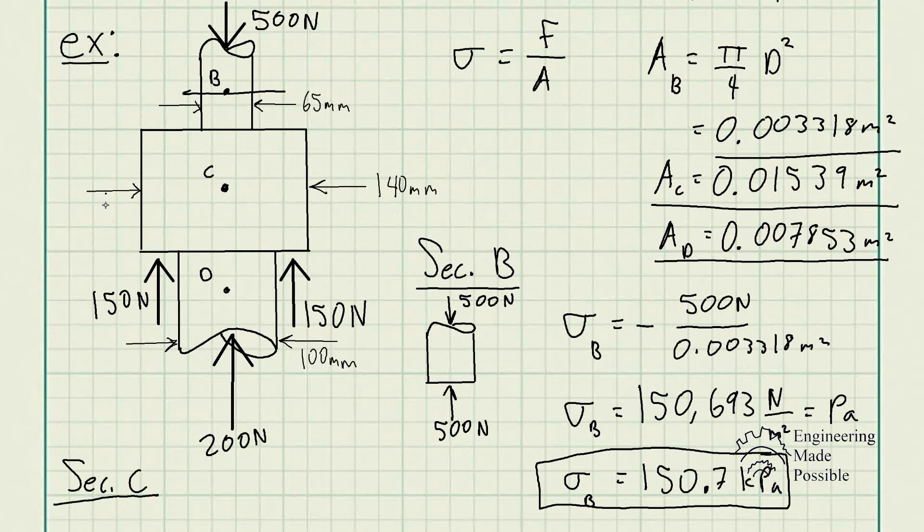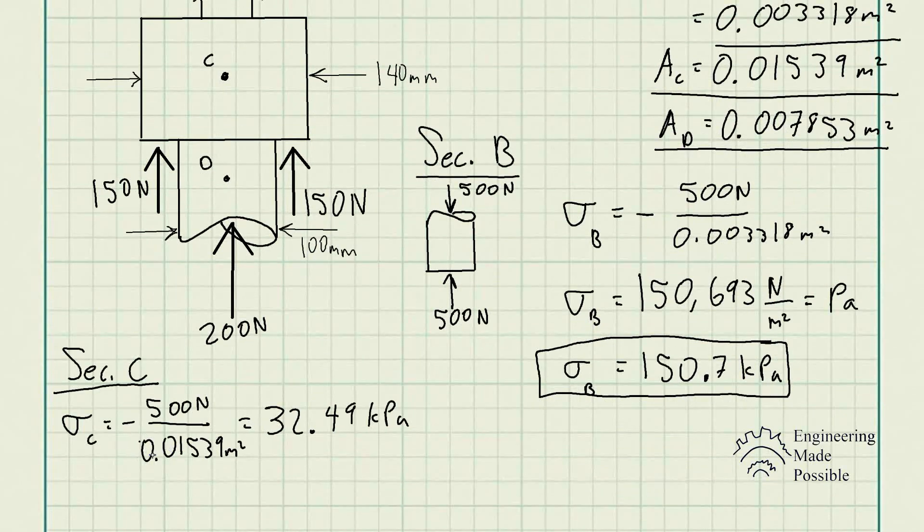We could see, if I happen to cut it right at point C, and whether I use the bottom portion as my free body diagram or the top, the sum of the external forces are always going to be 500 newtons. If I choose the top portion, it's 500 newtons. If I choose the bottom portion, it's these three external forces, which is equivalent to 500 newtons. So that's going to be the external force being applied at this location. So, the stress at C is equal to negative because we're seeing it's being compressed as well. 500 newtons divided by the cross-sectional area, which gives us 32.49 kilopascals here.